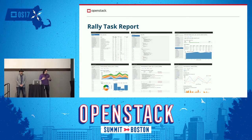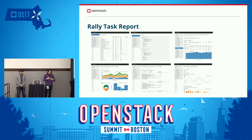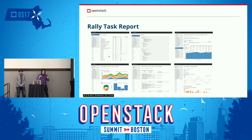You have Rally task reports that you can generate with one command based on any results you have. It's one HTML file that contains multiple pages inside. It has an overview where you can see the list of subtasks that you have run, and then detailed information about what subtask was actually run, its result, and different charts and so on.